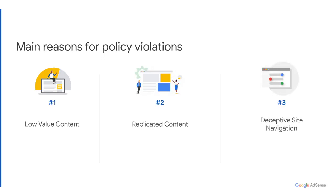The third and last main violation is site navigation. Users need to be able to easily navigate your site. This can be achieved by categorizing your content using menu bars and so on. Keep in mind that we may review all pages of your site and not just the sign-up URL where you place the ad code. That's why it's very important to make sure each page has valuable content that is not repetitive and is easy to navigate.